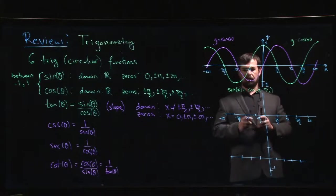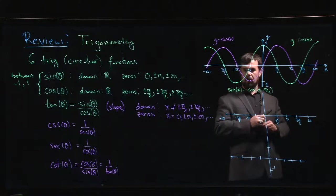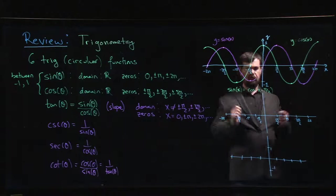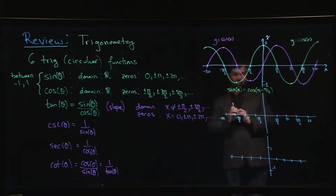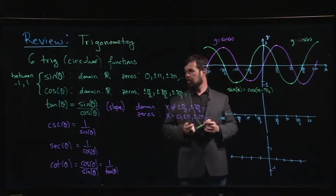Right? So when x is equal to 0, right, cosine is equal to 0. When x is equal to pi over 2, we're at 1. Yeah, so that works out. Okay? So you do have this kind of translation property between the two of them. We have this relationship.